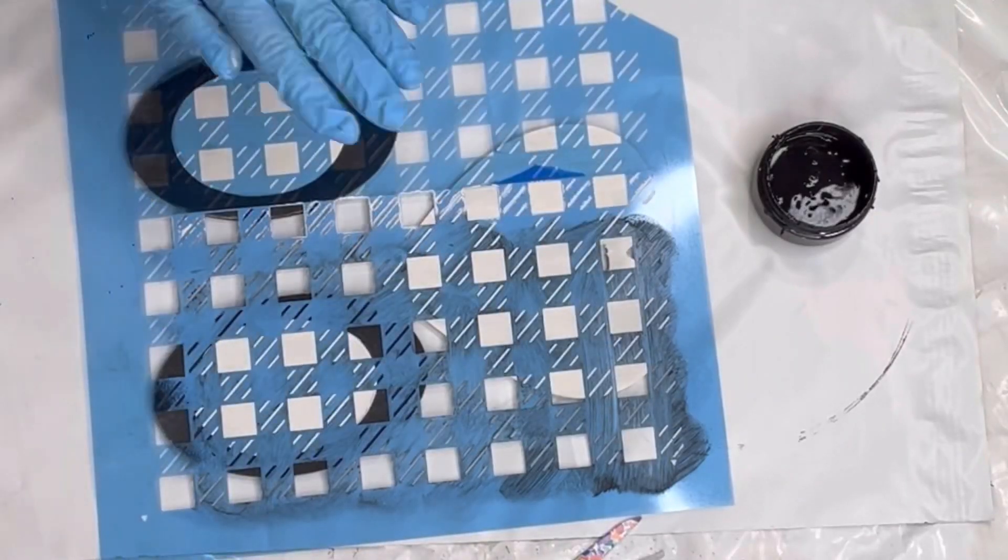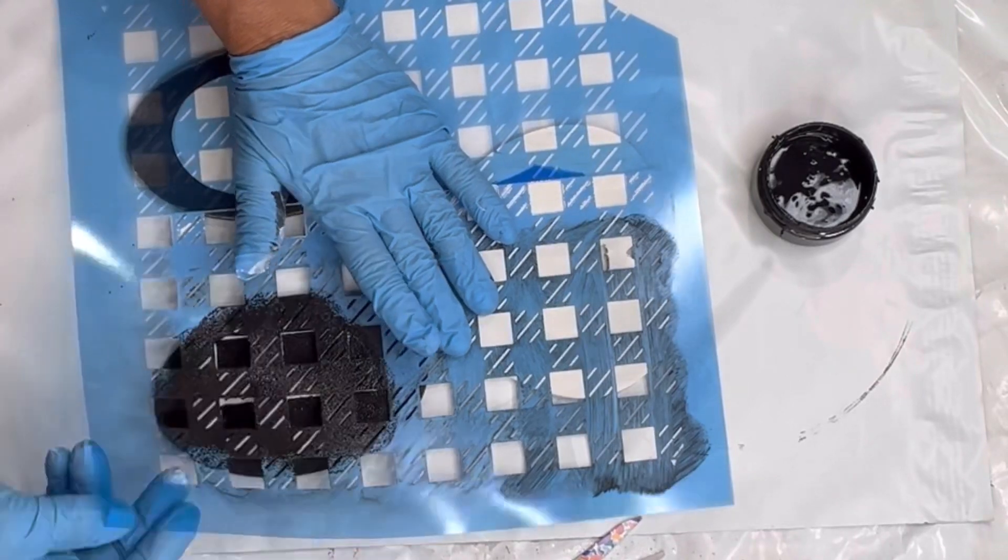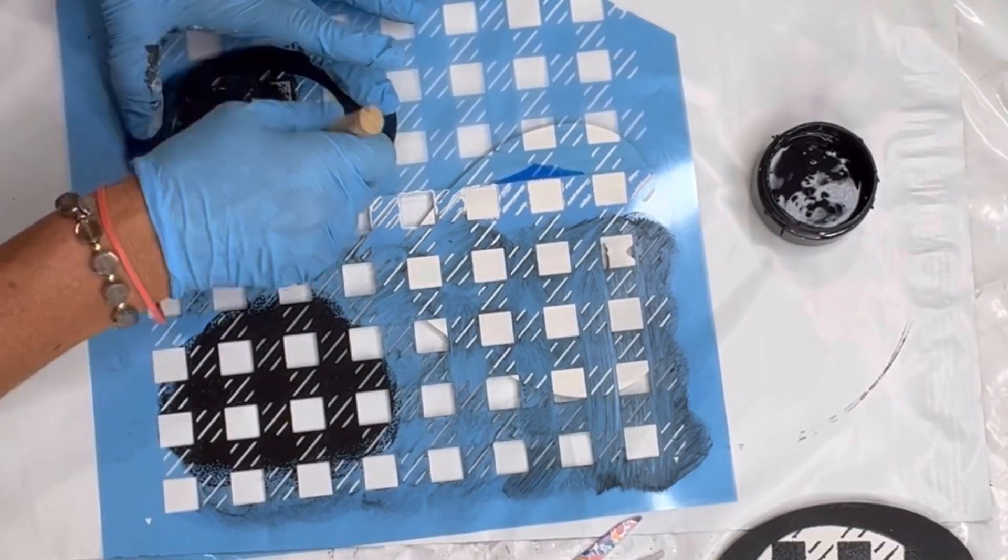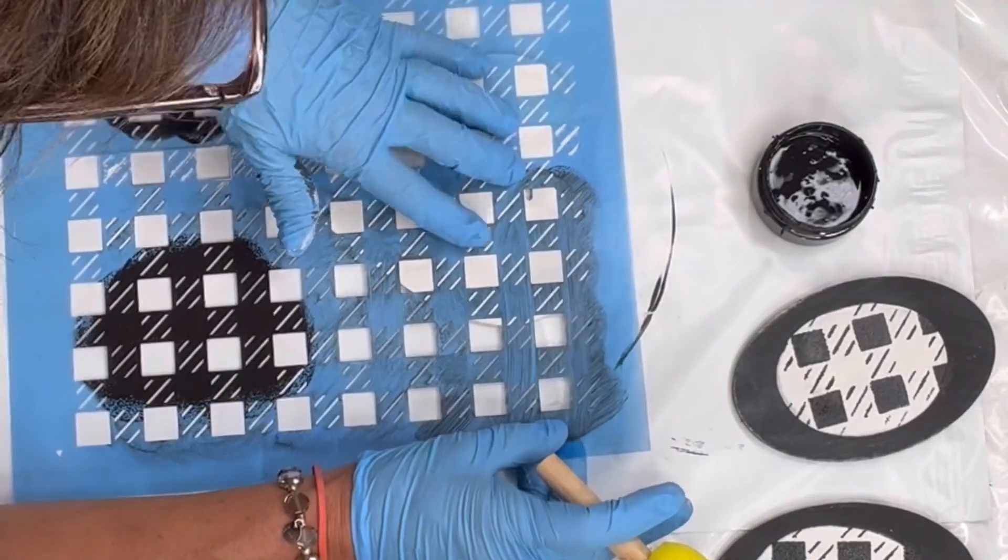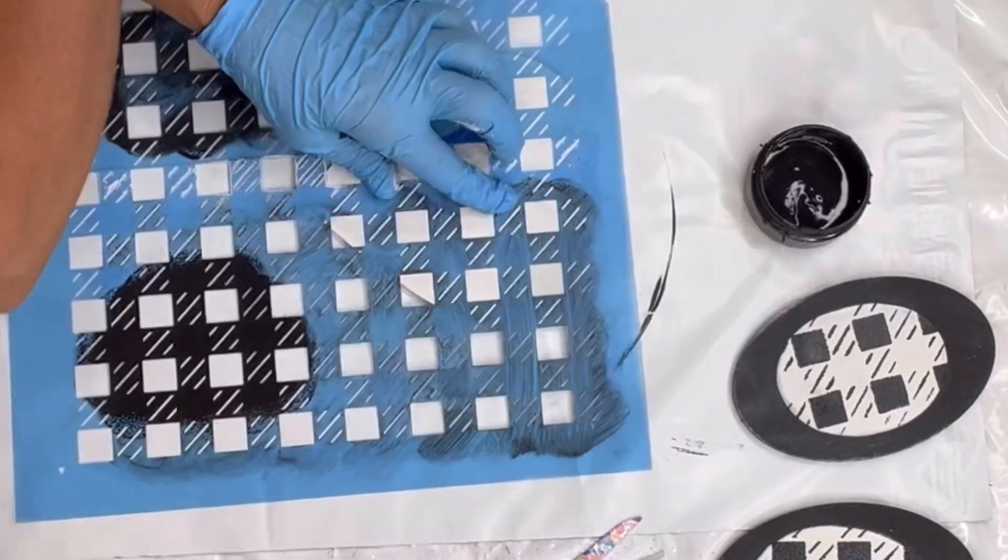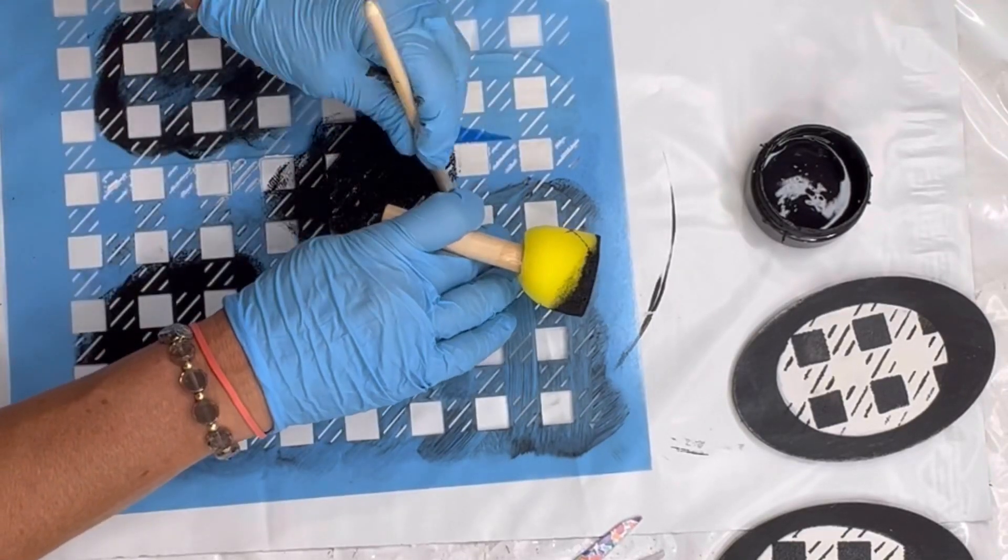Once I had everything dry, I took this gingham stencil. You can get these at Hobby Lobby pretty inexpensively. I'm just stenciling in the gingham check, or buffalo check, whichever you want to call it, onto the white parts of the oval shapes and my heart.